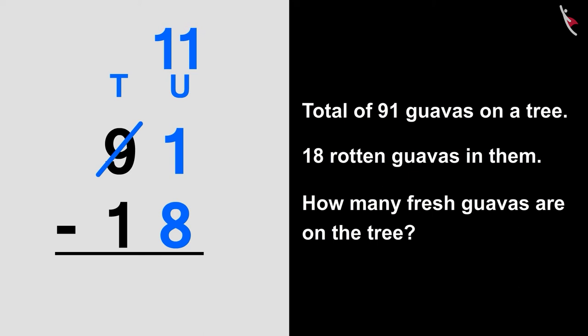Now, we will do 11 minus 8. Which means, if we will subtract 8 from 11, the answer is 3. We will write 3 like this here below the unit place. As we have borrowed 1 from 9, it will become 8.